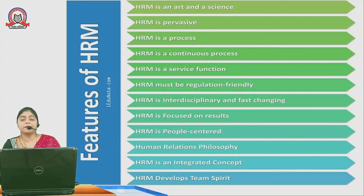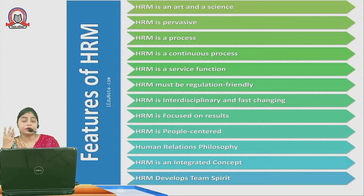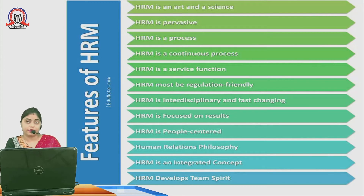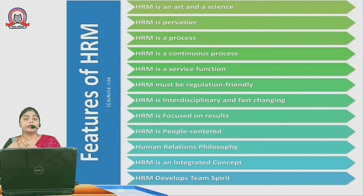Third, HRM is a process. As we saw in the definition, we need to acquire, train, motivate, maintain, and retain good employees in our organization — so it is a systematic process. Each and everything, one by one, we need to do with the employees. Not only do we need to hire them, but we need to train them, we need to appraise them if they are working up to the mark, and we need to maintain them.